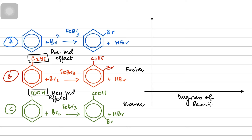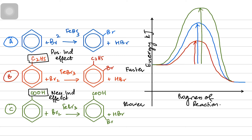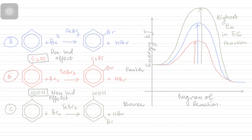If we follow the energy profile diagram — with progress of reaction on the x-axis and energy on the y-axis — we can see that reaction A, the blue line, represents the standard energy profile for an exothermic reaction. Reaction B has lesser activation energy because it's a faster reaction, while reaction C, the green one, has the highest activation energy. The activation energy of reaction B is smaller because ethylbenzene is more reactive, while benzoic acid is the least reactive in electrophilic substitution. The reason is the positive and negative inductive effect of the groups.